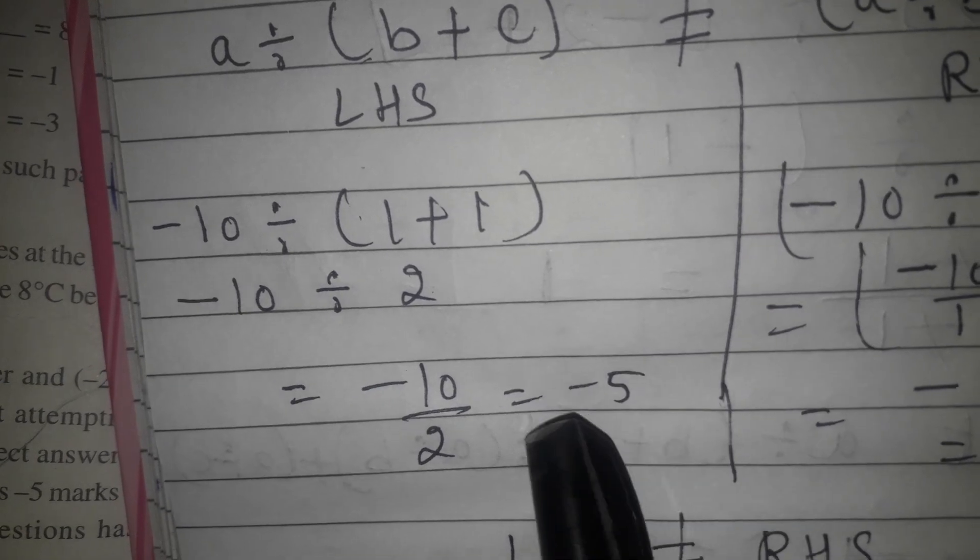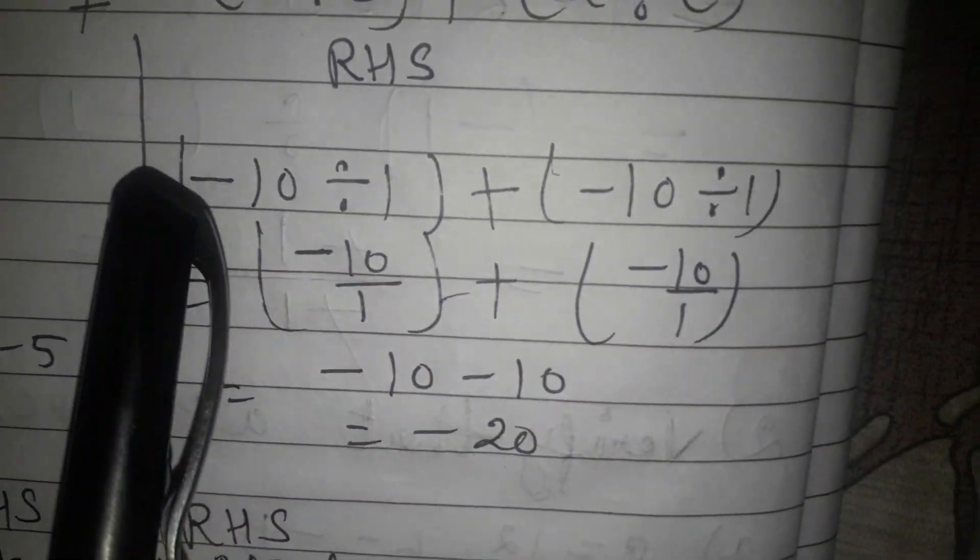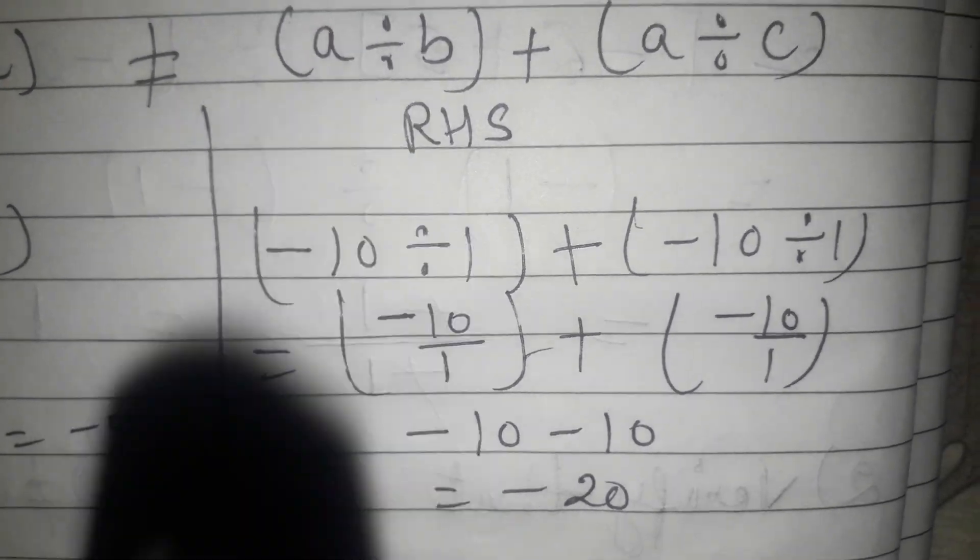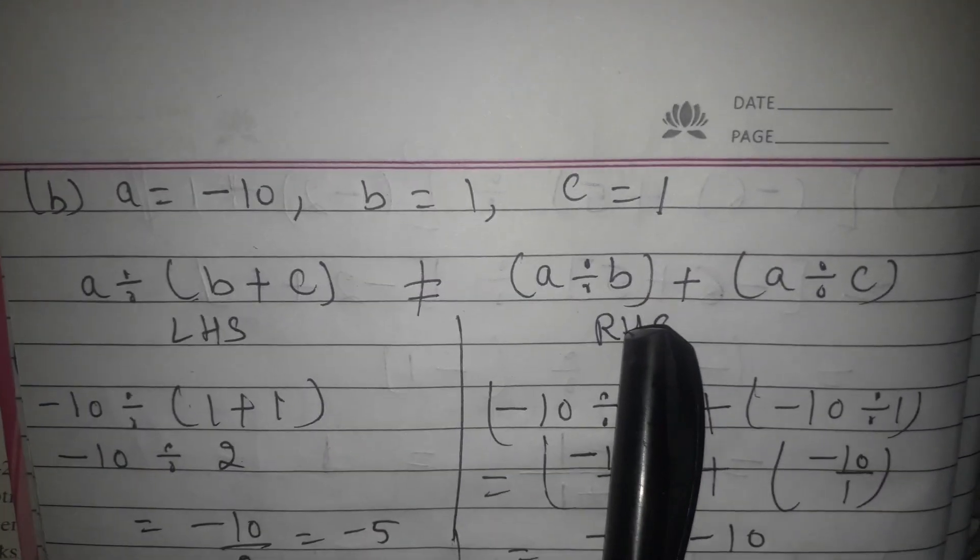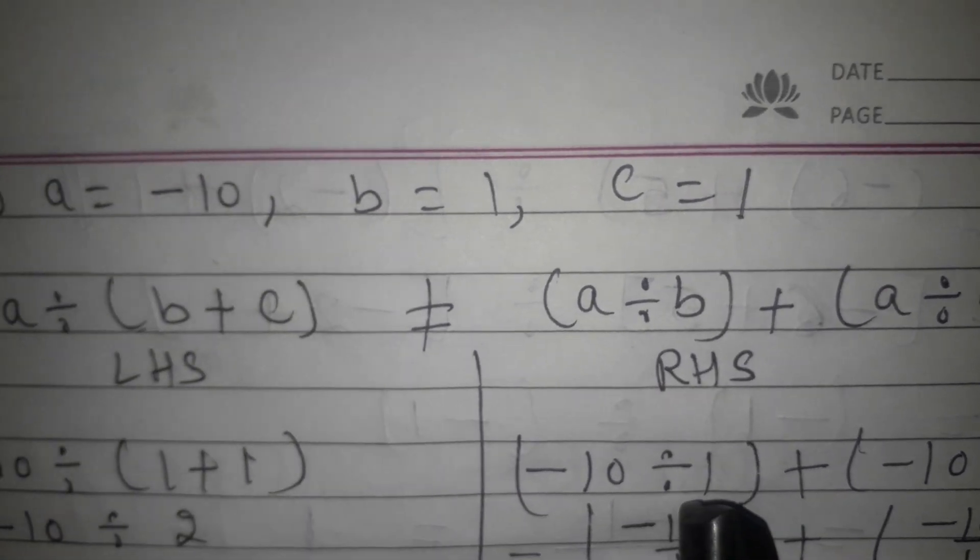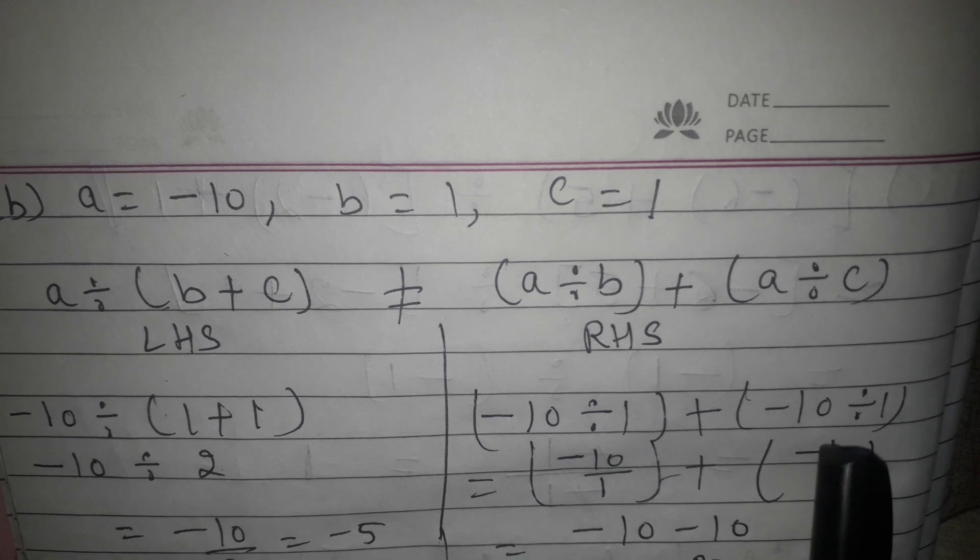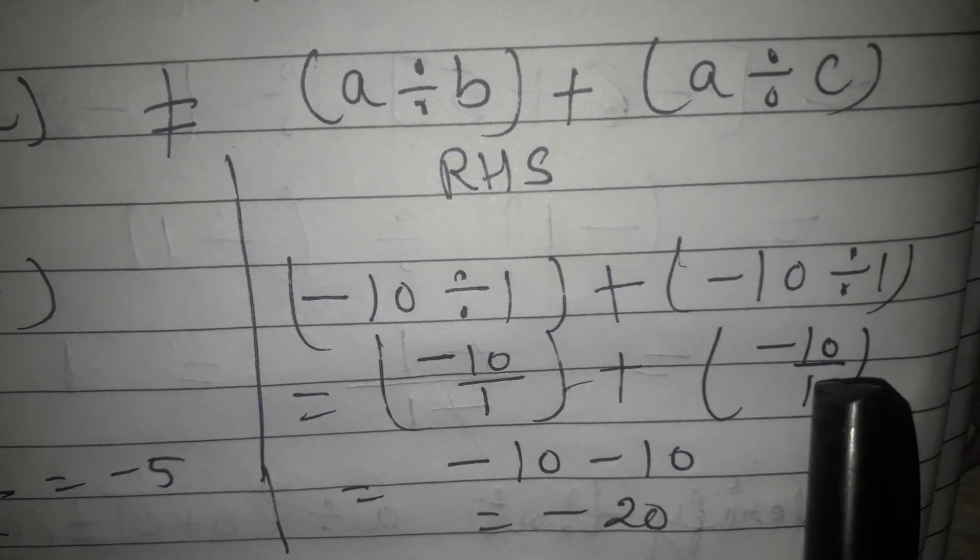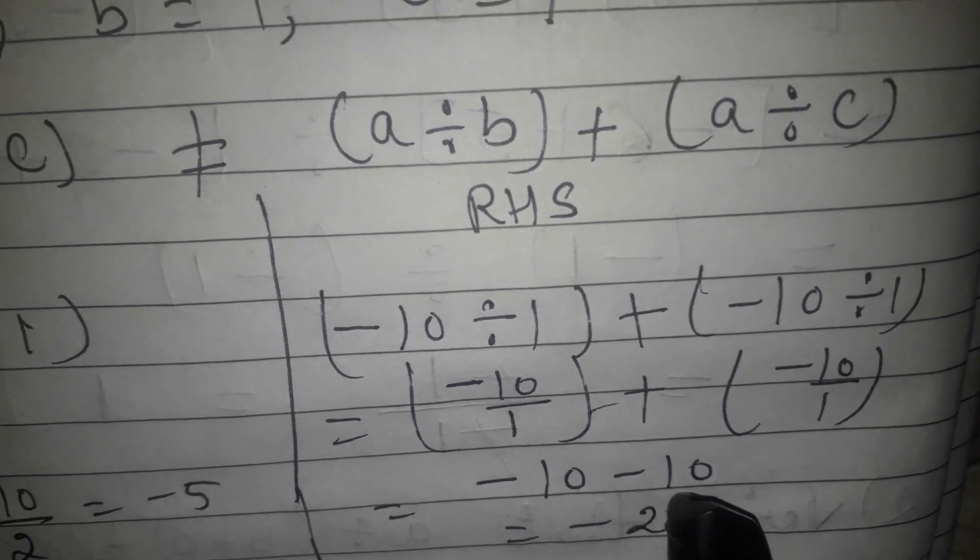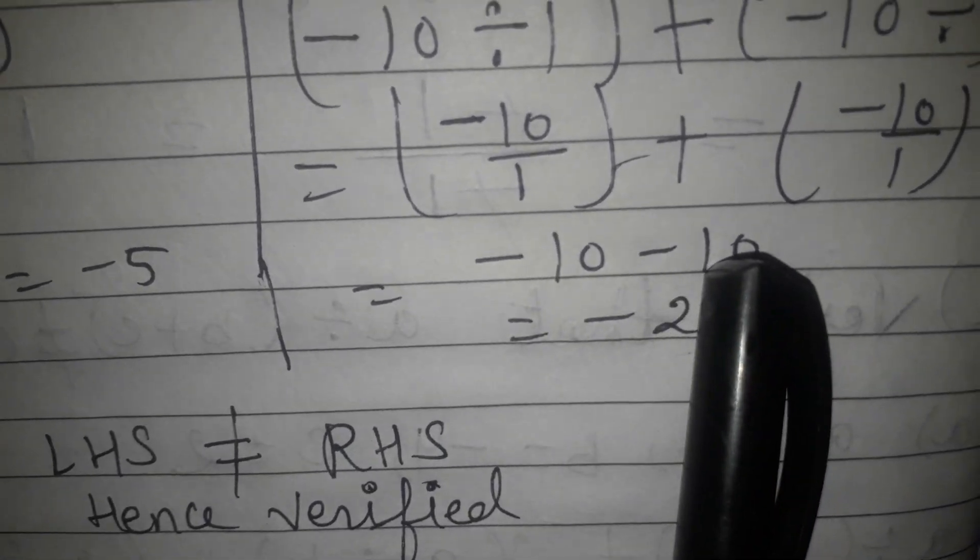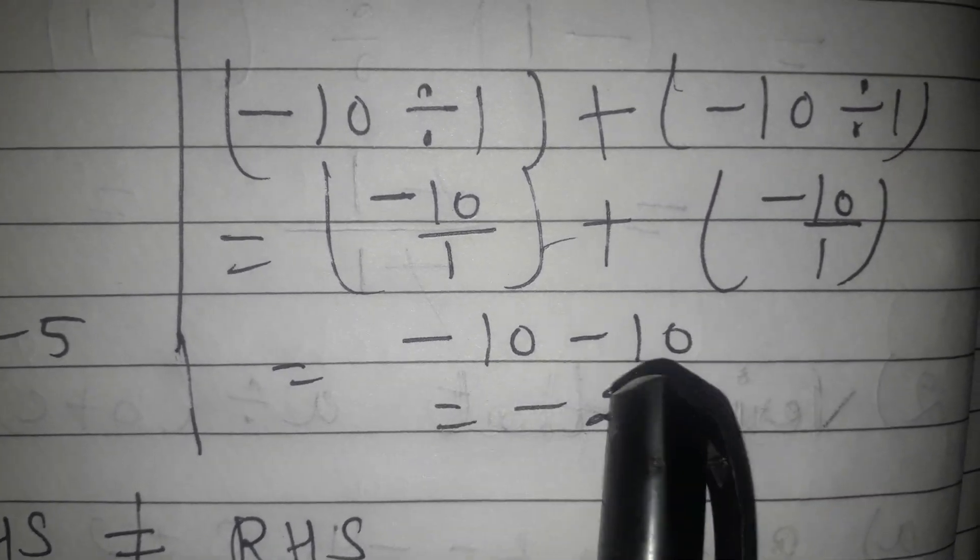Look at the right hand side now. Minus 10 is divided by 1 plus minus 10 is divided by 1, because we have to solve A divided by B plus A divided by C. A means minus 10, B is 1, A is minus 10, C is 1. Minus 10 divided by 1 will become minus 10. Minus 10 and minus 10 will become minus 20, because both are of negative sign and we will do addition. 10 plus 10, it will become 20 and sign which is repeating sign.